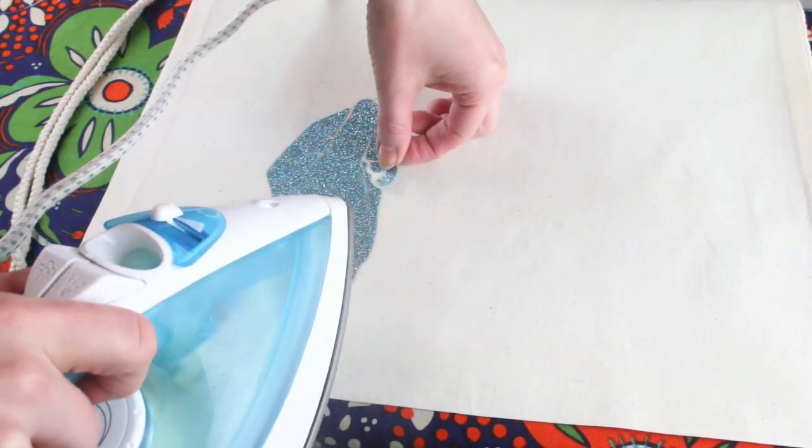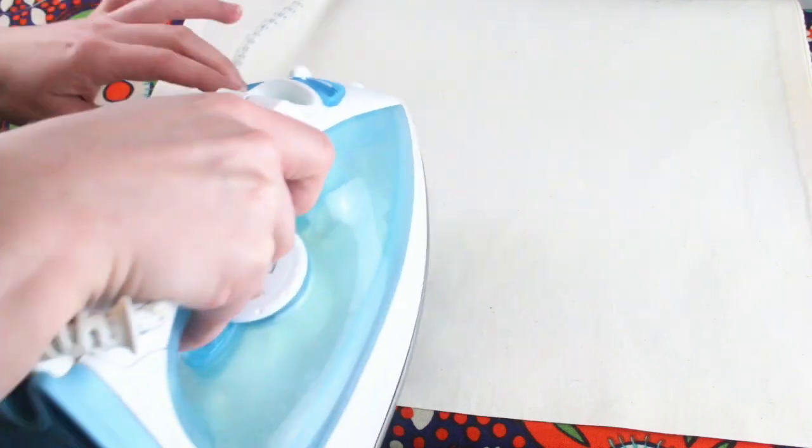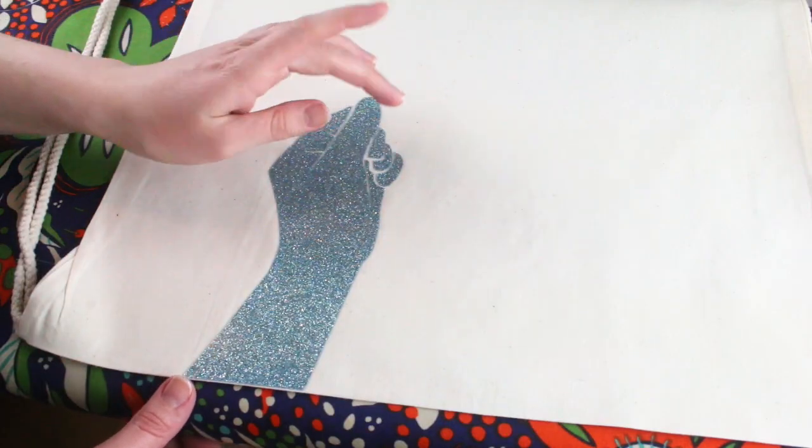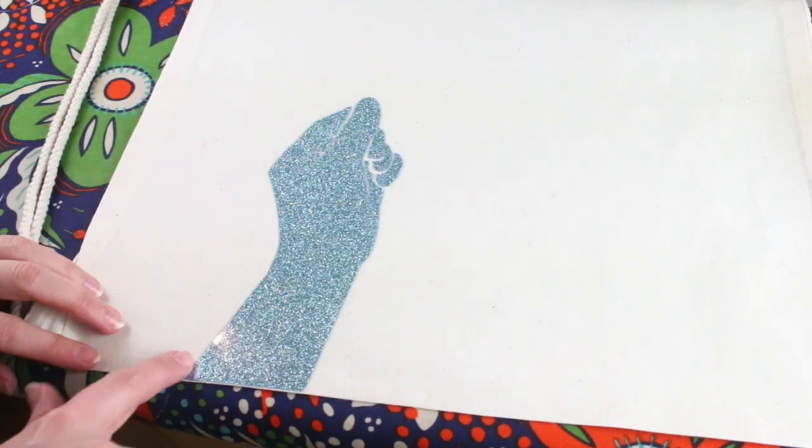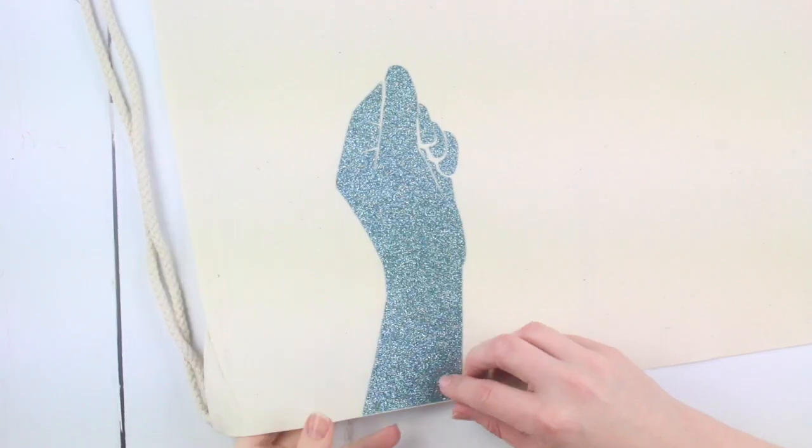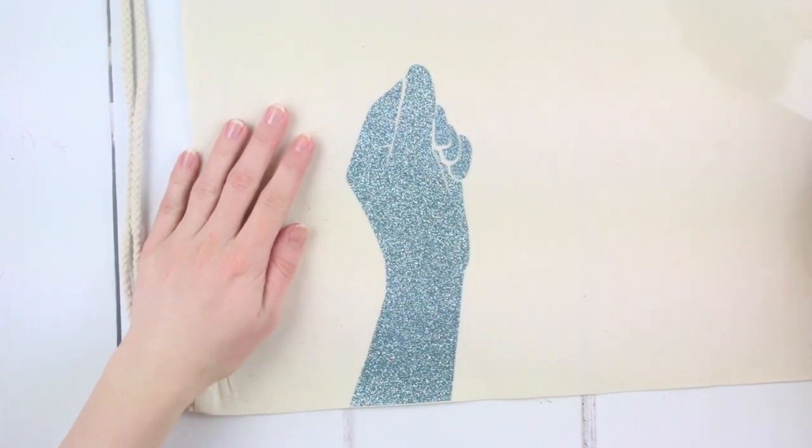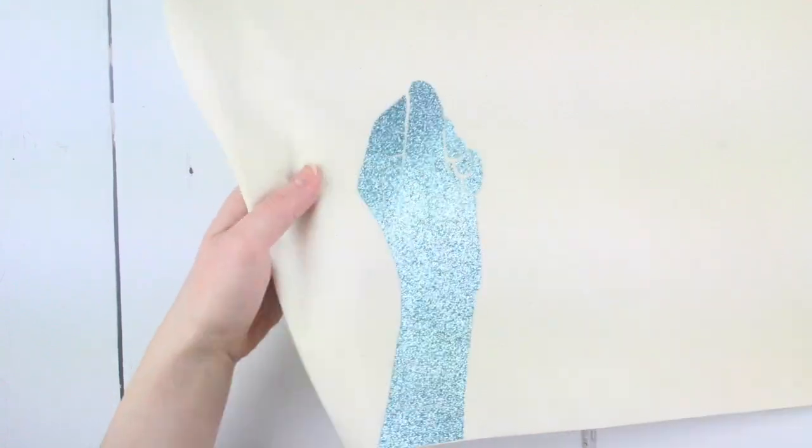If any little sections move during ironing, pop them to one side then iron them on once the main part has attached. Test the edges to check the hand is fully attached. There's a thin layer of clear plastic on top of your hand foil. Peel this away now and do it for all the separate pieces.